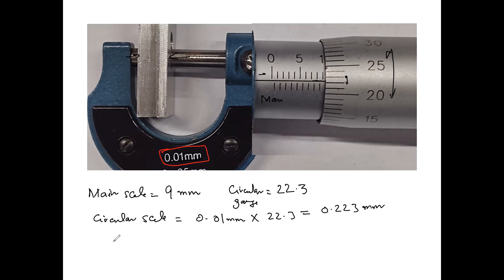Then for the total reading, what you do is you combine both the main scale and the circular scale. So you have 9 plus 0.223 millimeters, that gives you 9.223 millimeter. That's how you read a reading on the micrometer screw gauge.